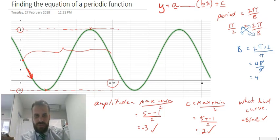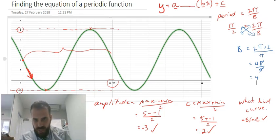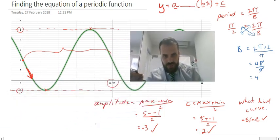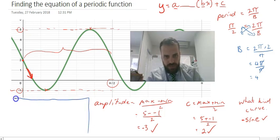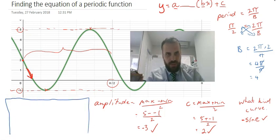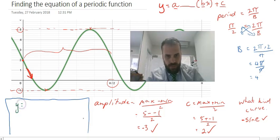All right, the final step here. I'm going to move my head out here for a second. The final step is to put all of that together into an equation. We know that y equals negative 3 sine, b is 4, 4x plus c, c is 2.